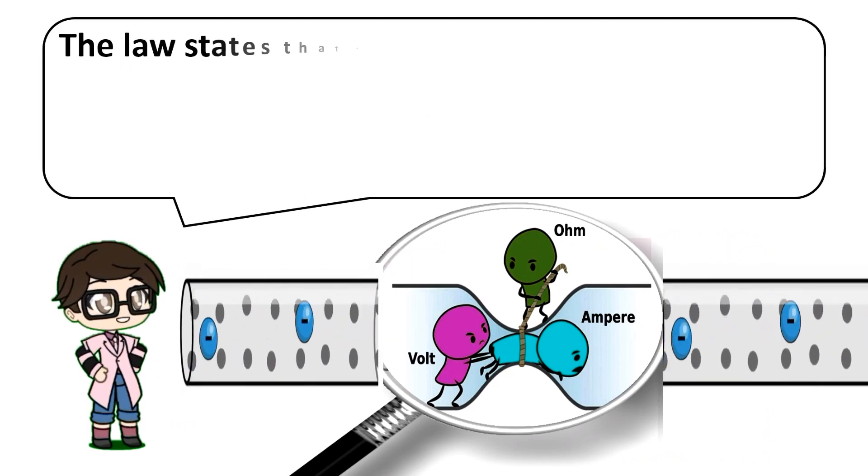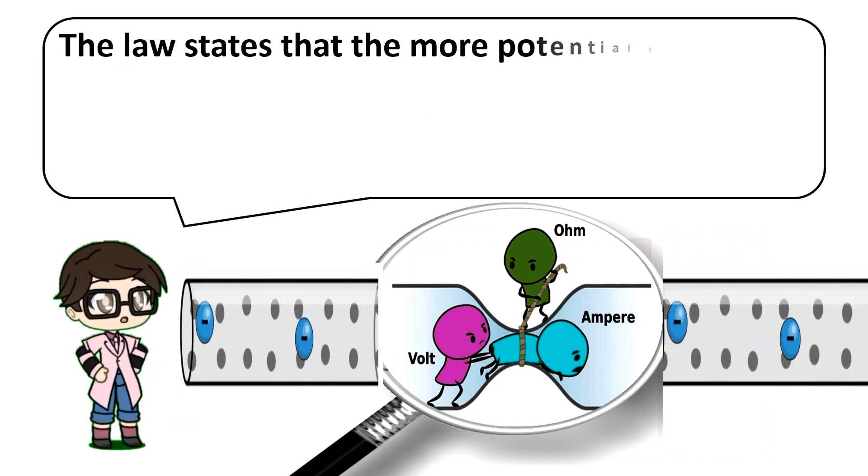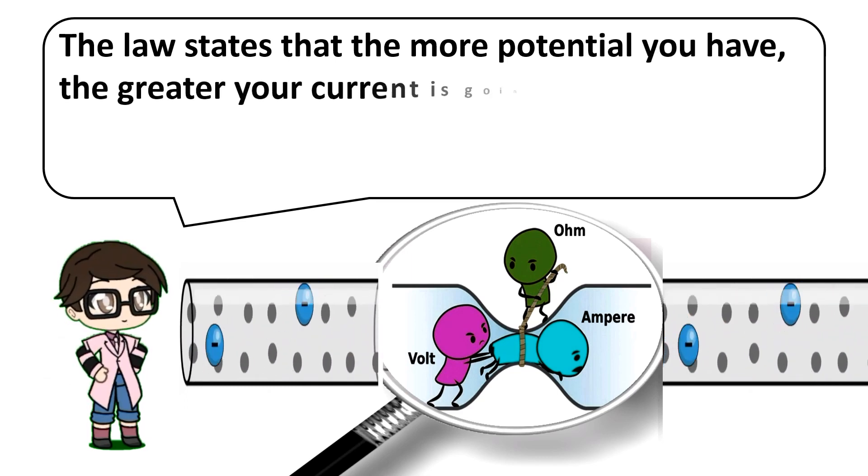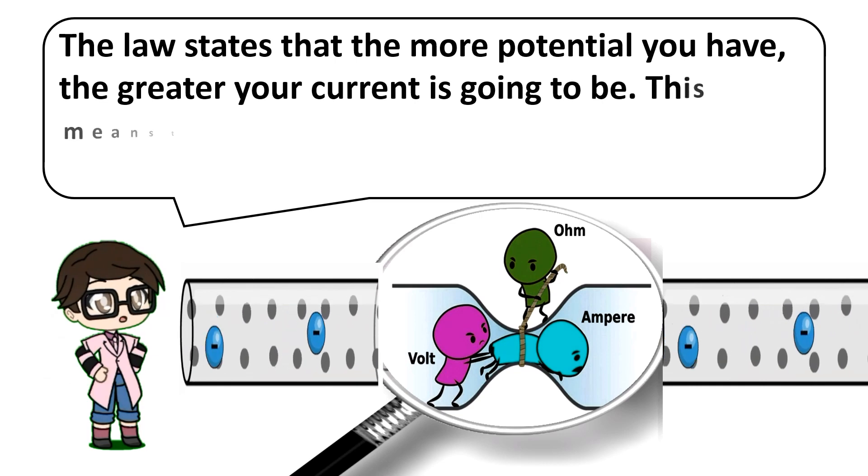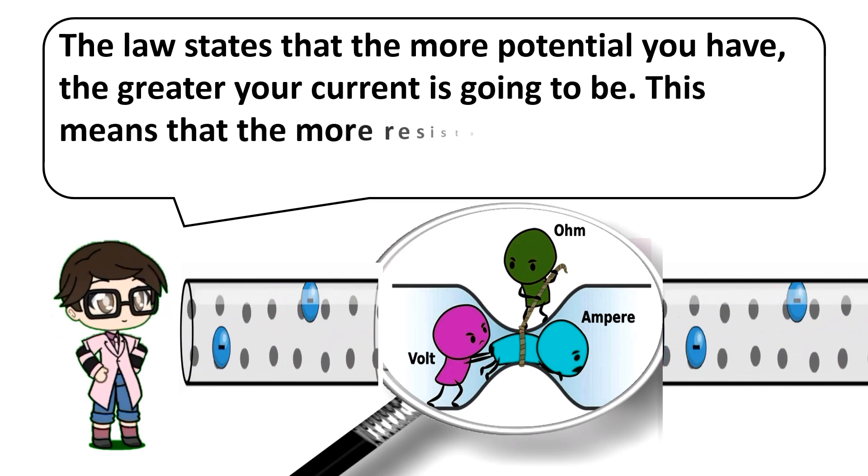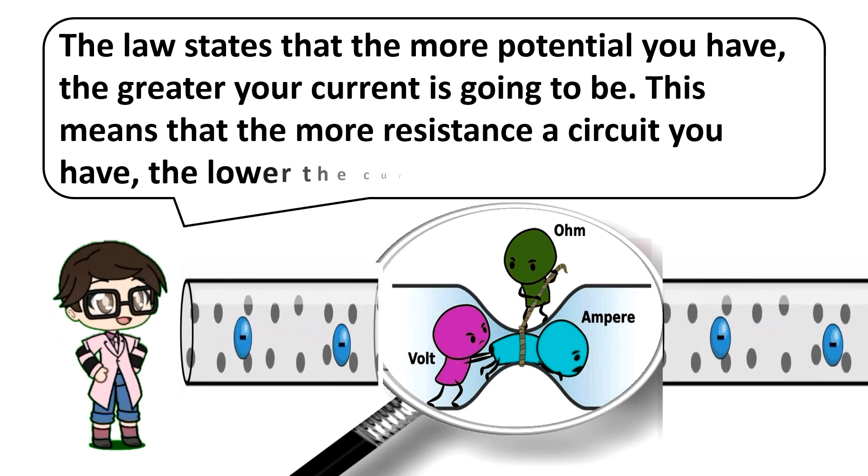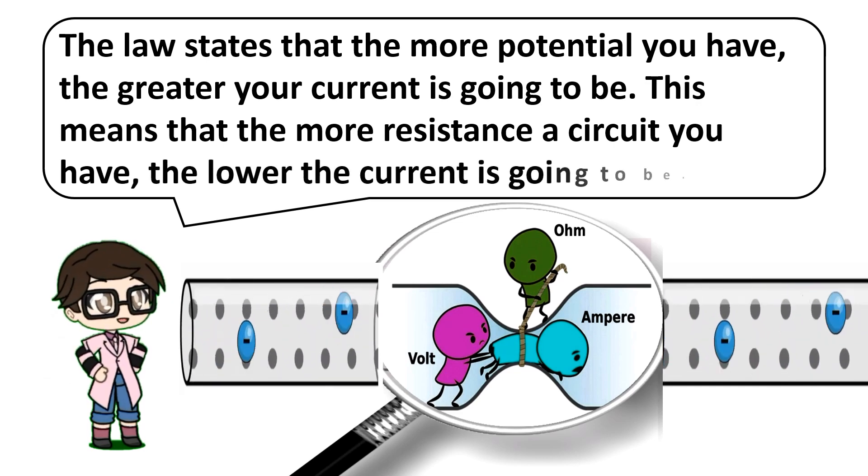The law states that the more potential you have, the greater your current is going to be. This means that the more resistance a circuit you have, the lower the current is going to be.